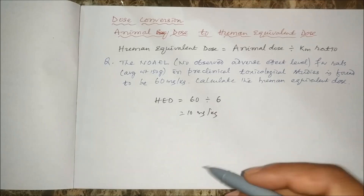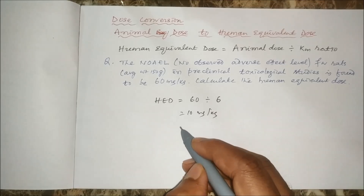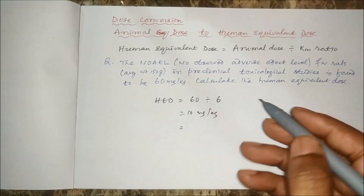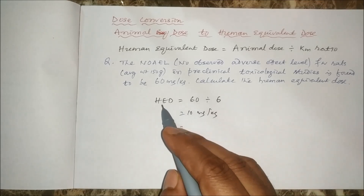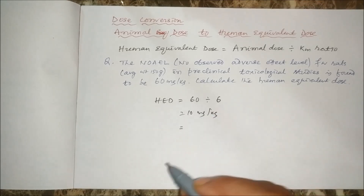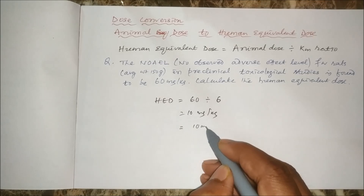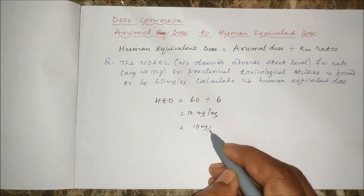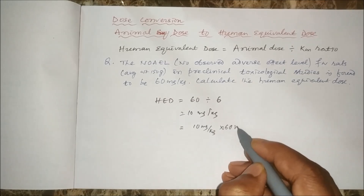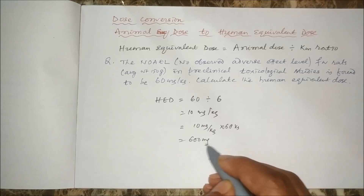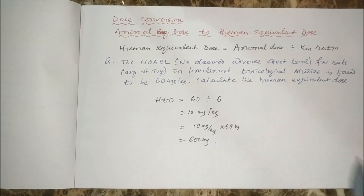To convert this to a total dose, since the average human weight is 60 kg, we calculate 10 mg/kg multiplied by 60 kg, which gives 600 mg. So this is all about dose conversion. Thank you.